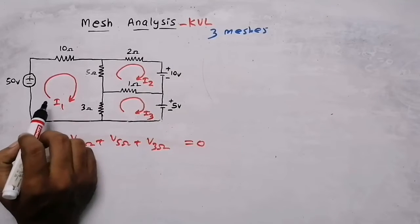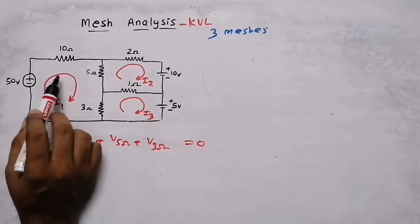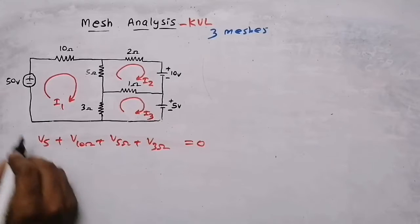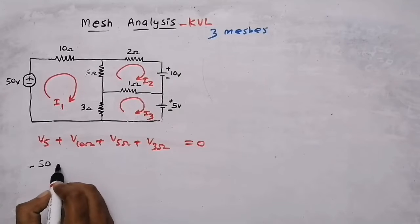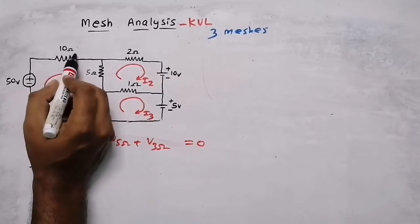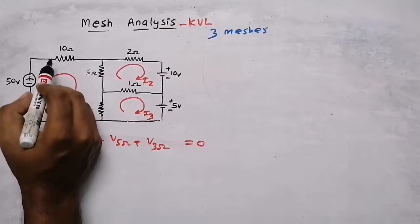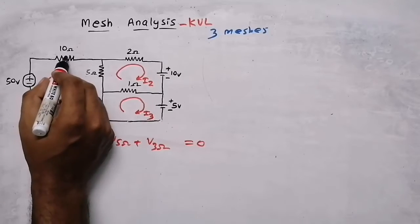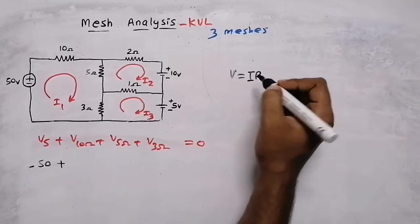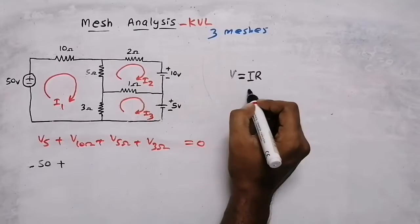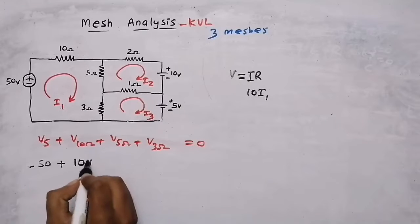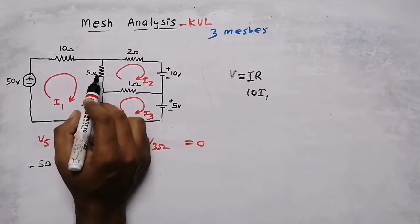Now we are going to write the mesh equation. In mesh one, the current is flowing in clockwise direction, so the current enters here at the negative sign — write negative 50. So the source voltage is negative 50. Then plus — for a resistor, always take the plus sign. What is the voltage across the 10 ohm resistor? According to Ohm's law, V = IR. R is 10 ohm and I is I1, so the voltage across 10 ohm is 10I1. Plus voltage across the 5 ohm resistor.